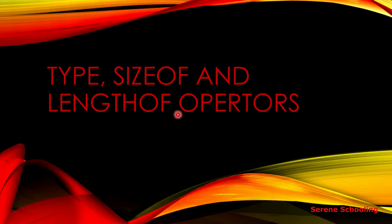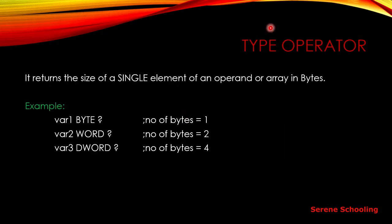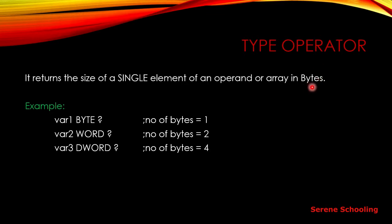These operators are basically very simple if you know the difference. First, let's go toward the TYPE operator. What this TYPE operator does is it just returns the size of a single element — whether it is an array, a variable declaration, or anything else. It will return the size of a single array element or single operand, not of all the initializers of the array. It returns the size in bytes, not in bits.